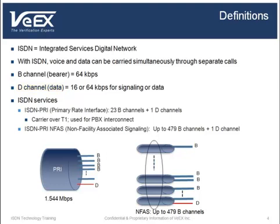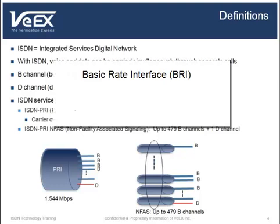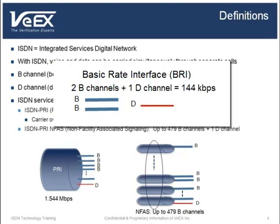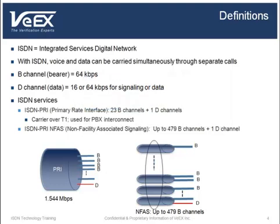There are two basic types of ISDN user networks: Basic Rate Interface, also known as BRI, and Primary Rate Interface, also known as PRI. BRI consists of two 64 kilobits per second B-channels and one 16 kilobits per second D-channel, for a total of 144 kilobits per second. This basic service is intended to meet the needs of most individual users.